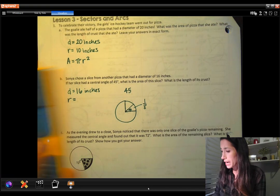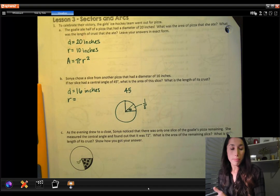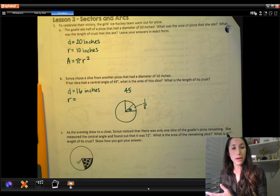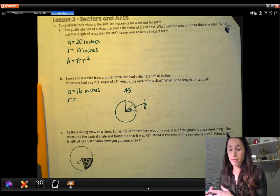So we're looking for that area. Once I find the area, I could just multiply that area by 1 over 8. Or I can multiply it by 12.5 percent or 0.125.